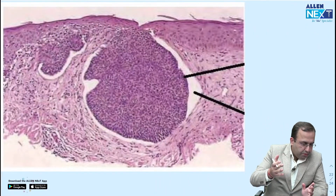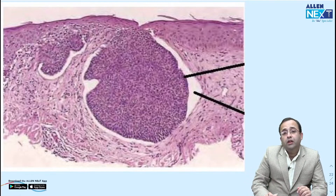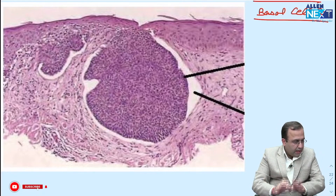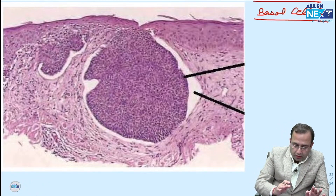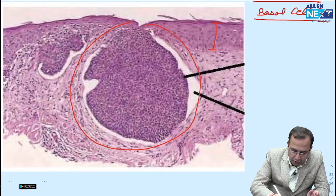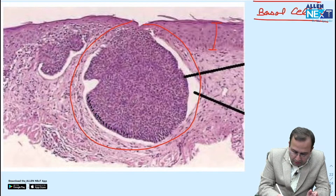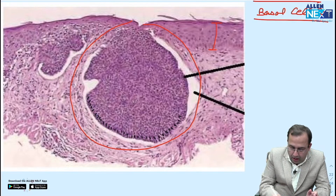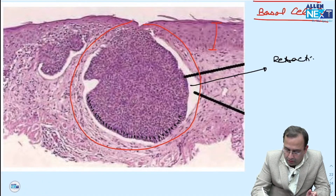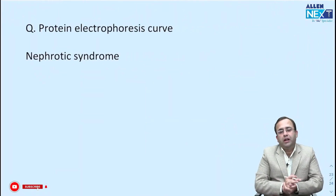Window period was in the option — so for that hepatitis B question, the answer straightforwardly becomes window period. Next question — basal cell carcinoma image was given. What we see here is normal stratified squamous epithelium showing the presence of a tumor with peripheral arrangement of basaloid cells — basaloid cells with peripheral palisading of the nuclei, along with presence of a clear white retraction cleft. This is the retraction cleft associated with basal cell carcinoma.